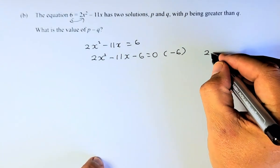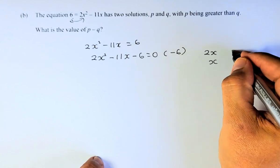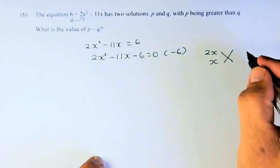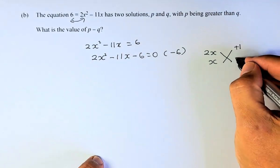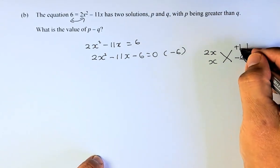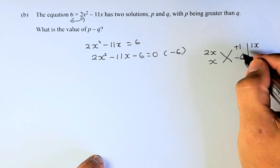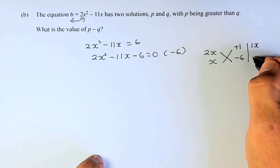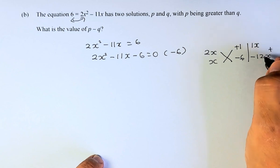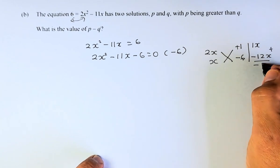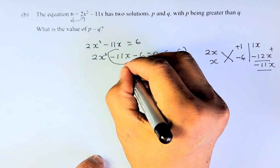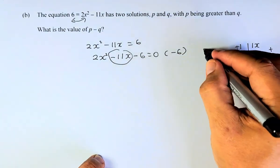So I have 2x here and x there, and then I'm going to use the cross method. It's going to be 1 and minus 6. So what happens, I'm going to cross multiply. x times 1 is going to be 1x. 2x times minus 6 is going to be minus 12x. And then when you add the two numbers, 1x minus 12x is going to be minus 11x. If that number equals the middle number, then that's the answer.